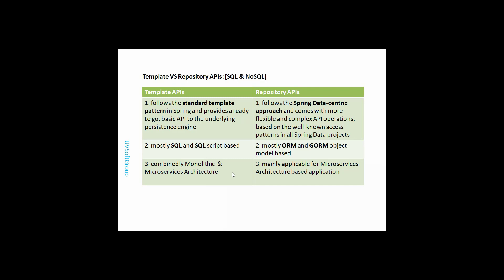In real-life applications, templates can be used in both monolithic and microservice architectures. Repository-based programming APIs are normally used in microservice applications. Modern applications need faster rendering systems for web pages, so repository-based APIs are faster than template-based APIs. That said, monolithic systems still need template APIs as well.